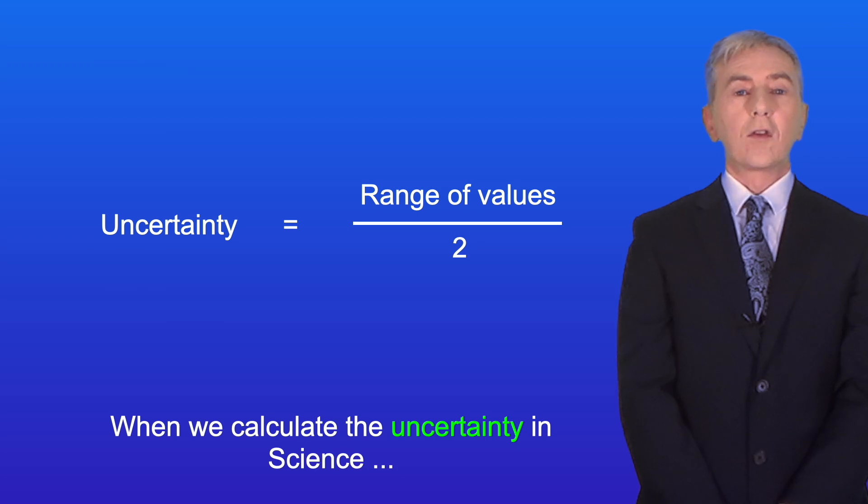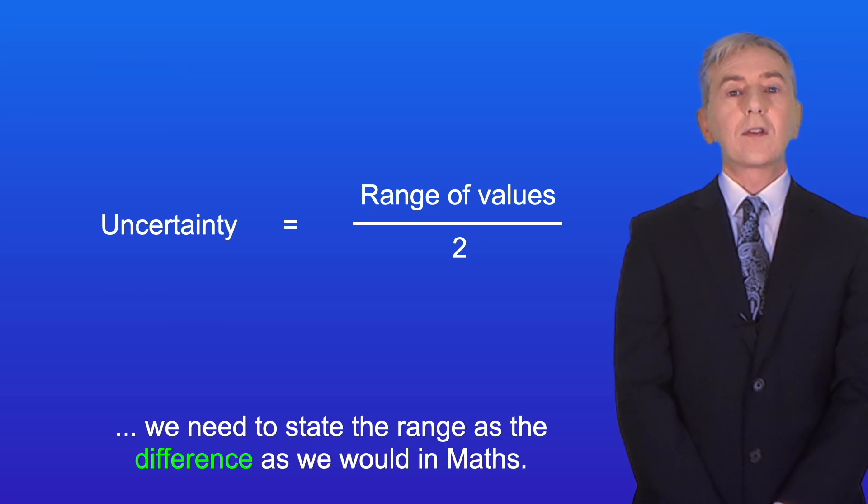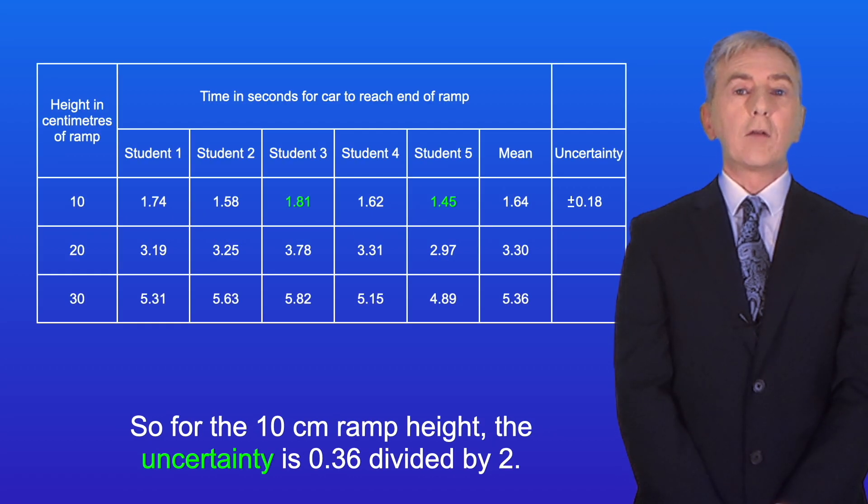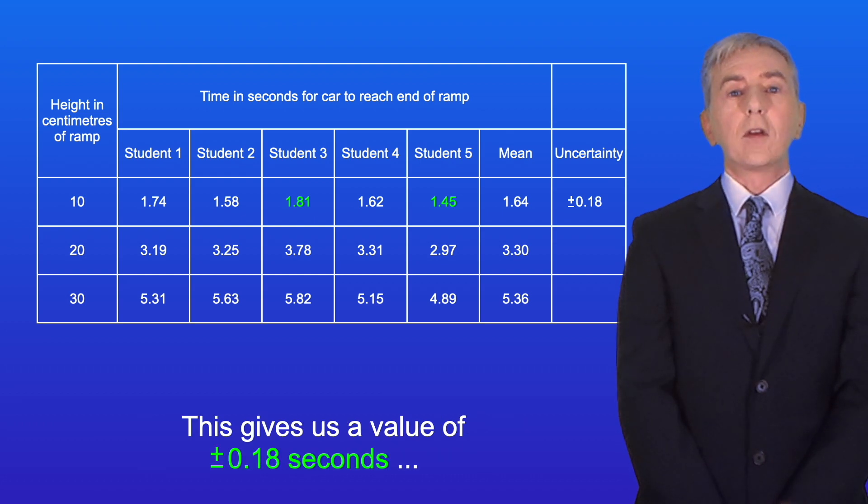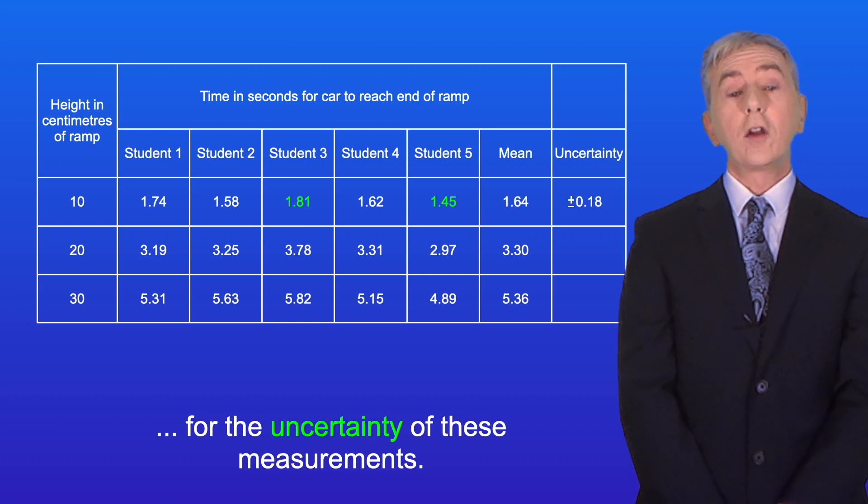Now when we calculate the uncertainty in science we need to state the range as the difference as we would in maths. So for the 10 centimeter ramp height the uncertainty is 0.36 divided by 2. This gives us a value of plus or minus 0.18 seconds for the uncertainty of these measurements.